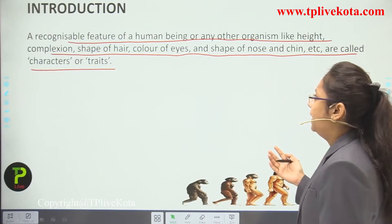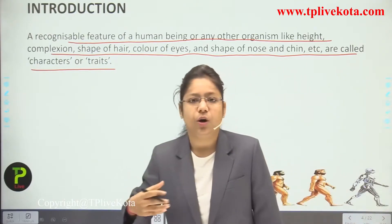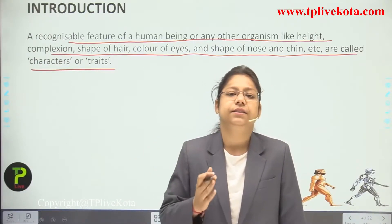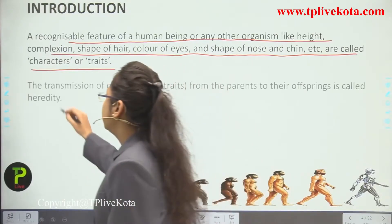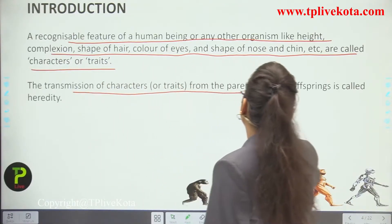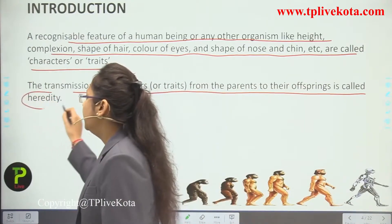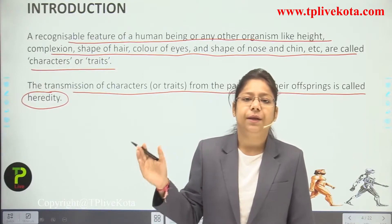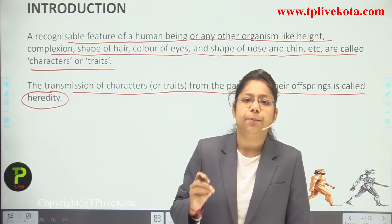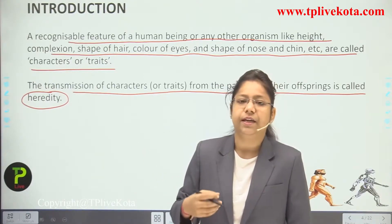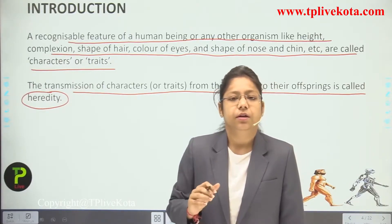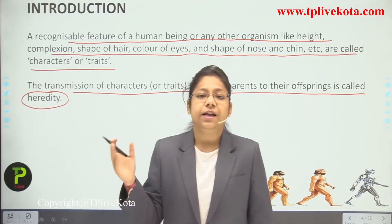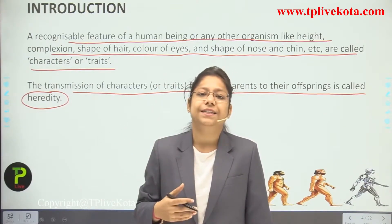Height, color of the eyes, shape of nose and chin — all these are normally called characters, but in scientific terms we call them traits. The transmission of characters from parents to their offspring is called heredity. All characters are transferred from parents to offspring, but some become activated and can be clearly seen — for example, if I have brown eyes, it is because my father transferred a gene for brown eyes to me.